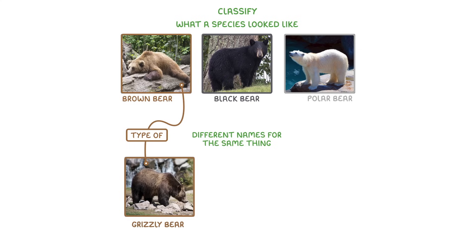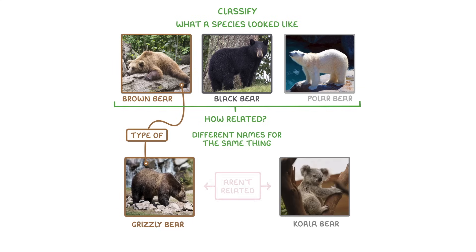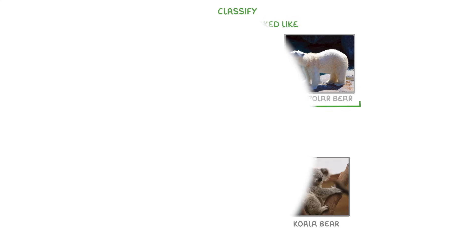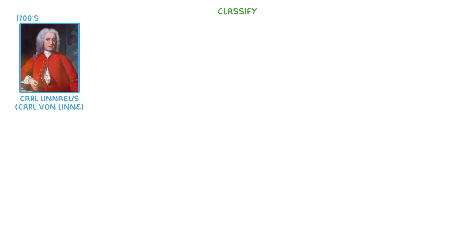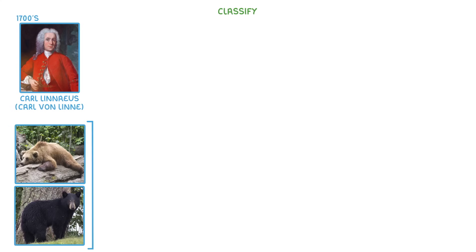The other problem is that simple names don't tell us much about how related the different species are. For example, grizzly bears and koala bears aren't really related at all. To try and fix all these problems, in the 1700s a man named Karl Linnaeus proposed a new type of classification, which grouped species together according to their characteristics and bone structures.